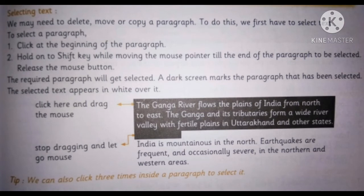Next topic is selecting text. We may need to delete, move, or copy a paragraph. To do this, we first have to select text. To select a paragraph, first click at the beginning of the paragraph. Second, hold the Shift key while moving the mouse pointer till the end of the paragraph. Release the mouse button and the required paragraph will get selected. A dark screen marks the paragraph that has been selected and the selected text appears in white over it. Click and drag the mouse, then stop dragging and let go of the mouse. You can see the paragraph get selected.